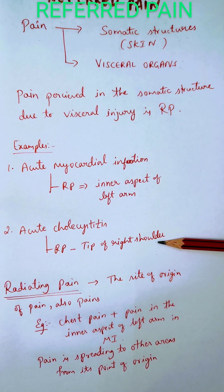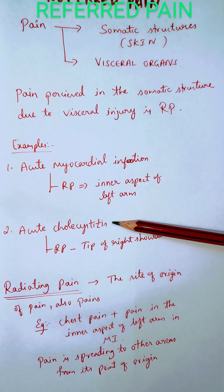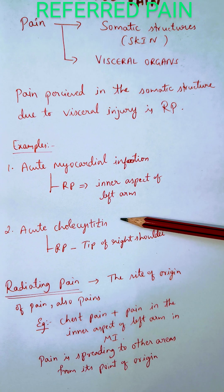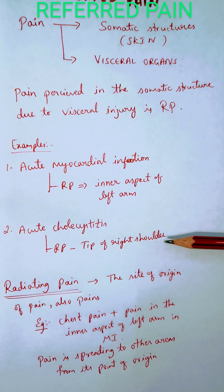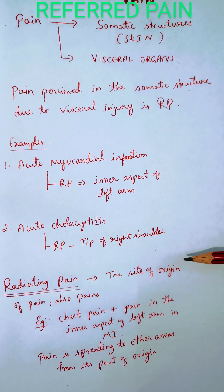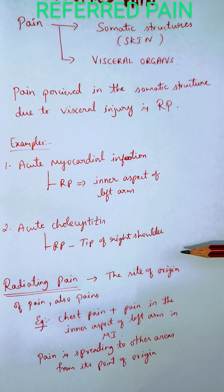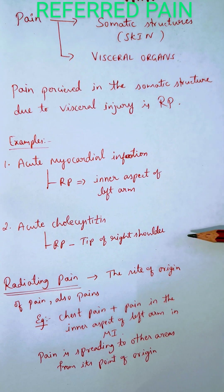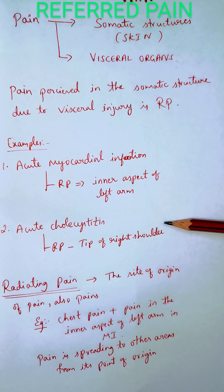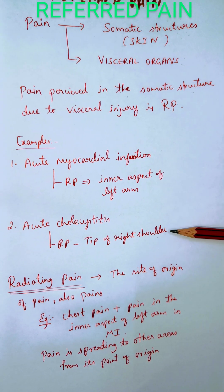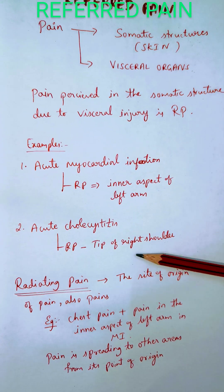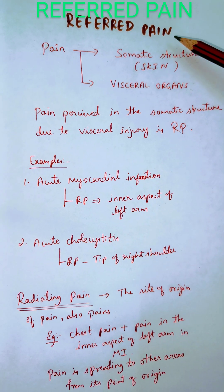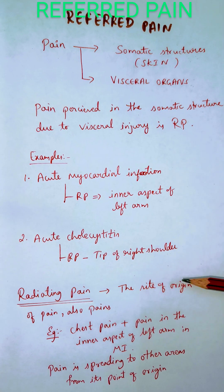Another example is acute cholecystitis, where the patient will complain of pain in the right shoulder. In acute cholecystitis — inflammation of the gallbladder — the gallbladder irritates the right side of the diaphragm. The diaphragm's nerve supply comes from the phrenic nerve, which arises from the cervical segment, so the pain is referred to the tip of the right shoulder.